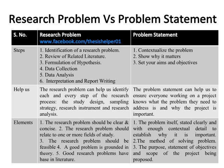The elements of research problems are five: Number one, the research problem should be clear and concise. Number two, it should relate to one or more fields of study. Number three, it should be feasible. Number four, a good problem is grounded in theory. Number five, good research problems have a base in literature.